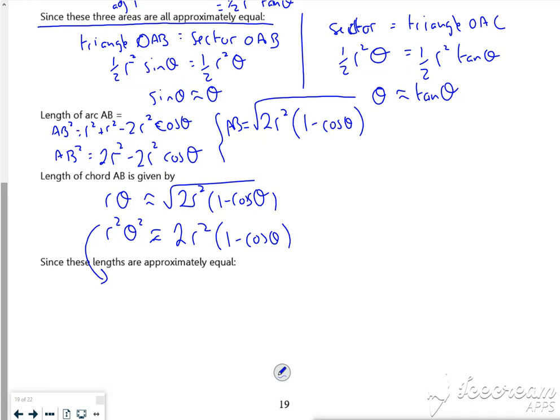So we're aiming towards cos theta is 1 minus one-half theta squared. Right, so the r squareds all go. So I've got theta squared is approximately 2 times 1 minus cos theta. I can divide through, so I've got one-half theta squared is approximately 1 minus cos theta.